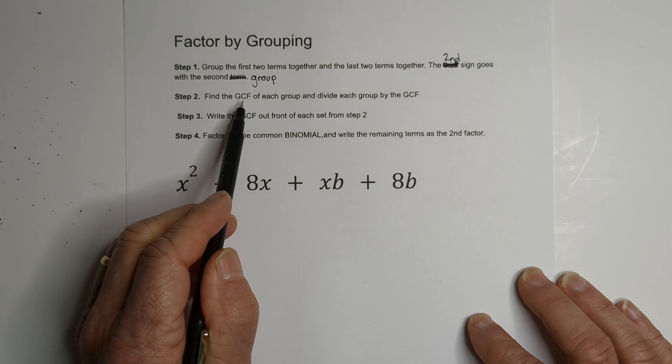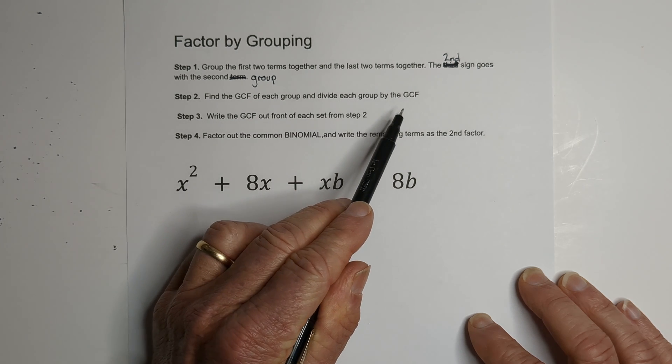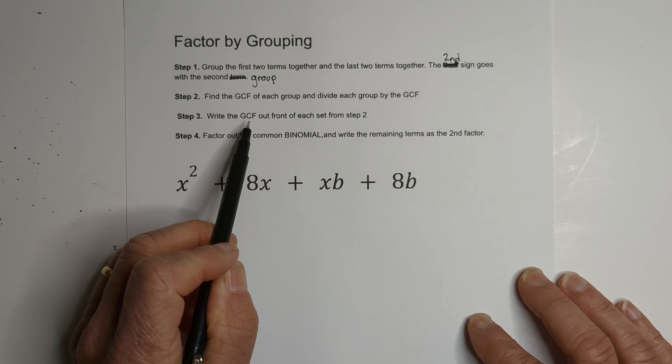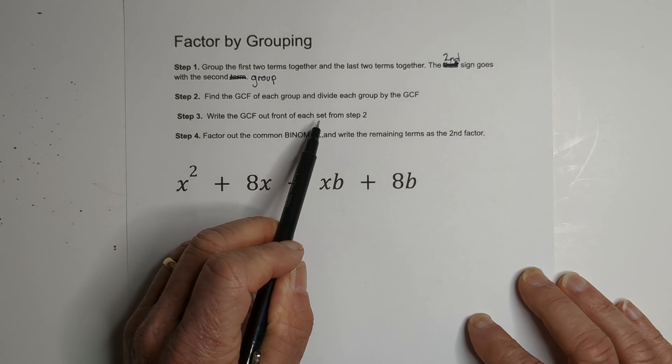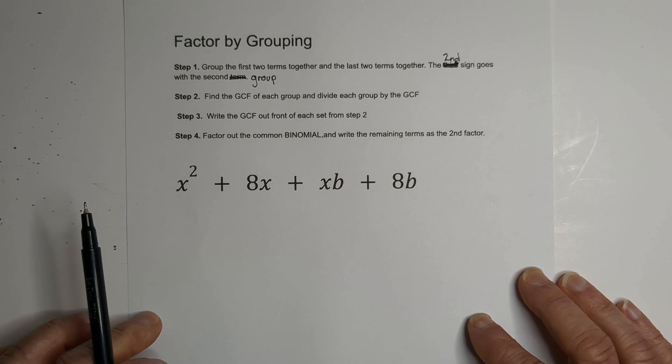Then you're going to find the GCF, greatest common factor of each group, and divide each group by the GCF. Then we're going to write the GCF out front of each set or group from step two. And then we're going to factor out a common binomial and write the remaining terms as the second factor.